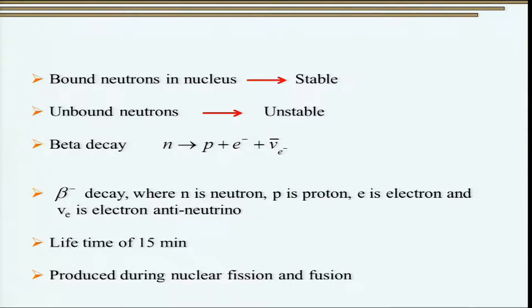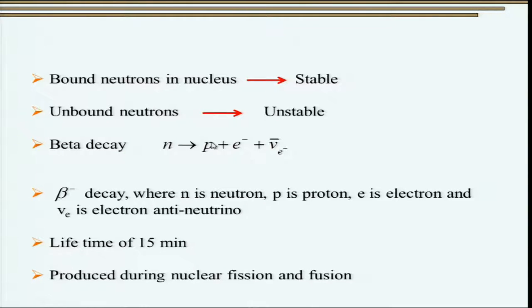Bound neutrons in the nucleus are absolutely stable. However, unbound neutrons not associated with any nucleus are highly unstable — they undergo what is known as beta decay, wherein a neutron is transformed into a proton, an electron, and an electron antineutrino. This decay mechanism ensures the lifetime of unbound neutrons is only about 15 minutes. Therefore, it is not possible to use unbound neutrons as a source, and it is necessary to produce neutrons as and when required.